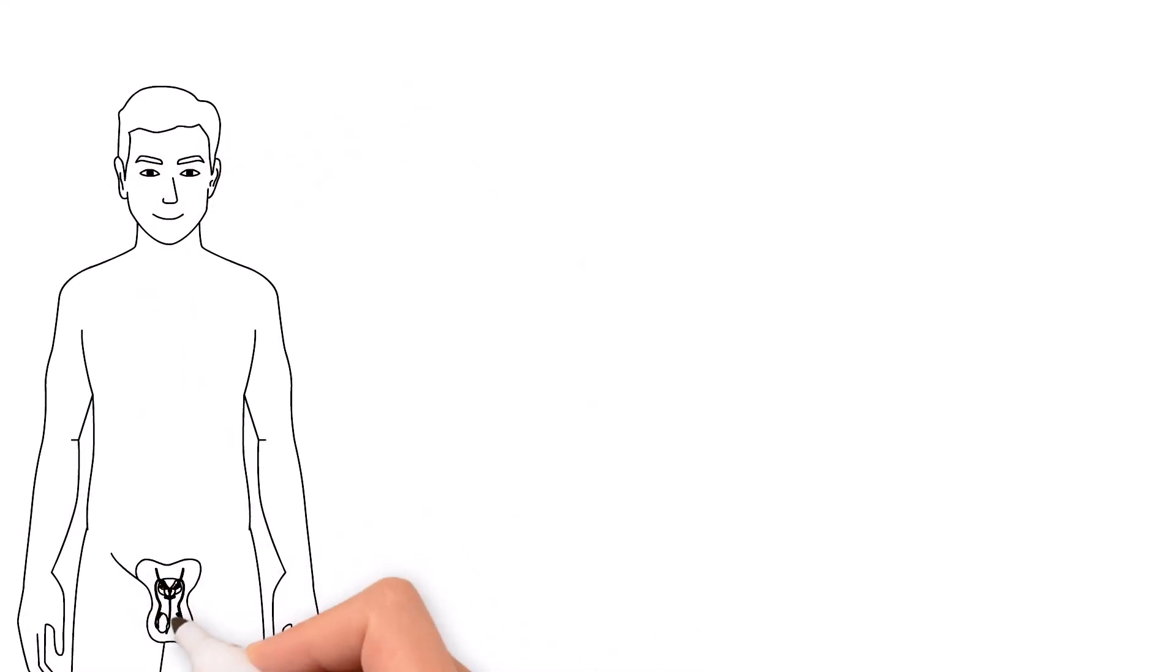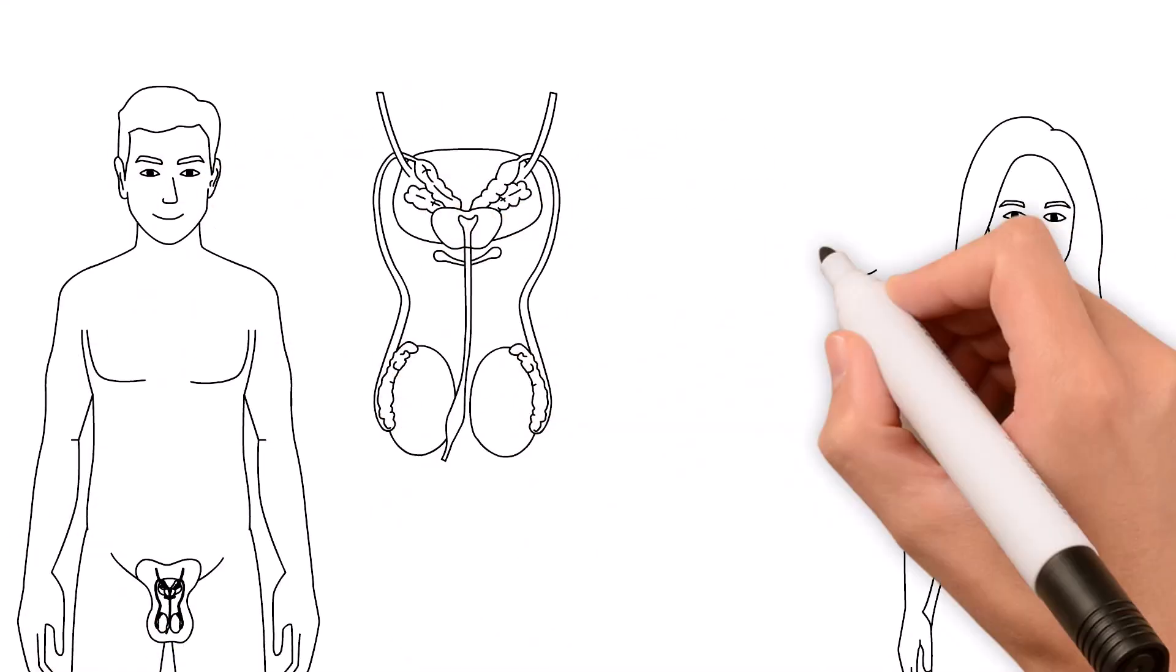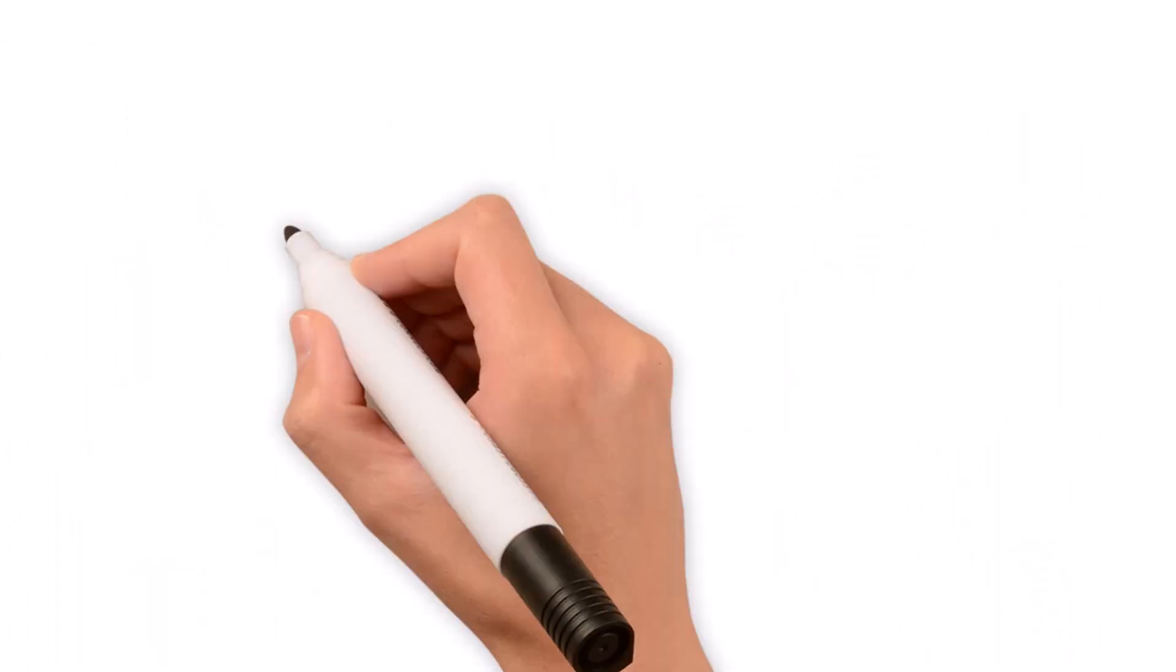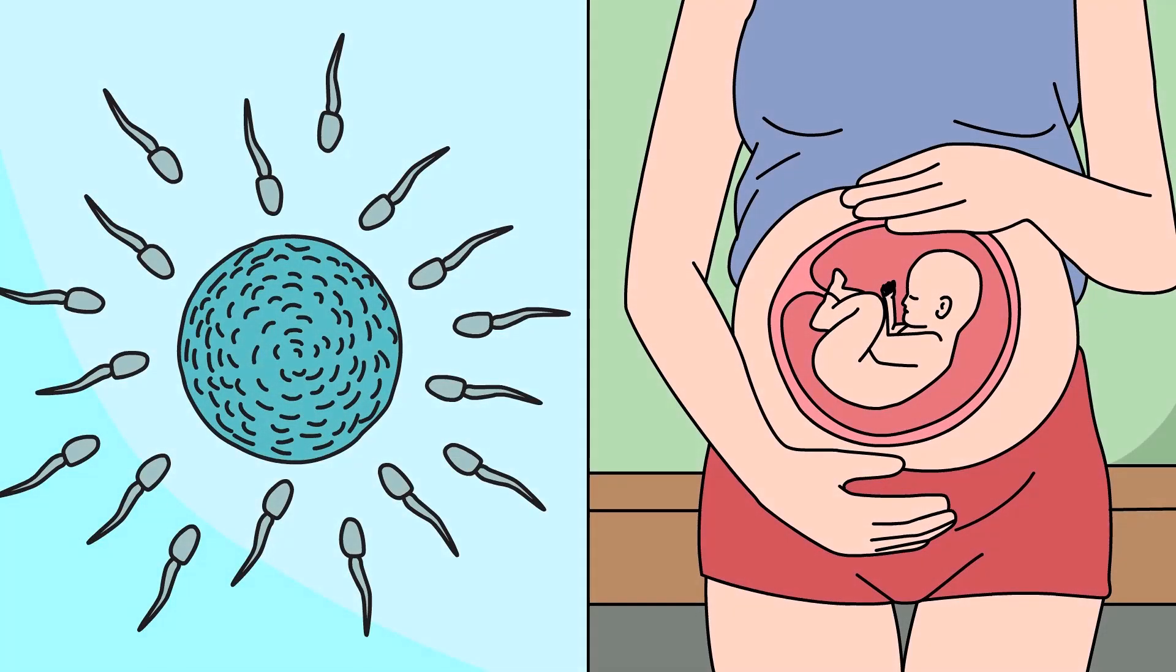Puberty is like a wake-up call for your reproductive organs. For guys, your testicles start producing sperm, and for girls, your ovaries start releasing eggs. This is what makes it possible for babies to be made later on.